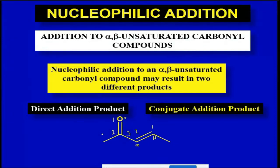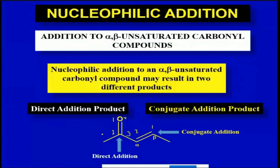Direct addition means 1,2-addition: if the nucleophile attacks the carbonyl carbon, that is direct addition. But if the attack of the nucleophile is on the beta carbon, then that is conjugate addition. The key concept is that the direct addition product is the kinetic product — fast to form — while the conjugate addition product is the thermodynamic product — slower, but the product is more stabilized.